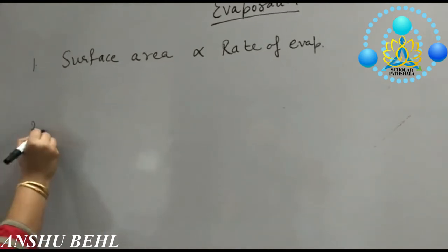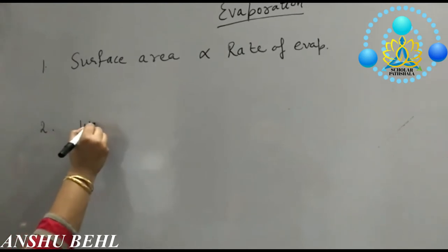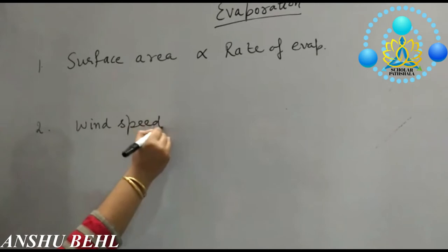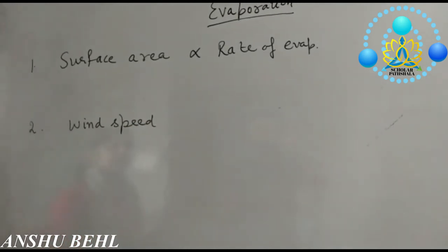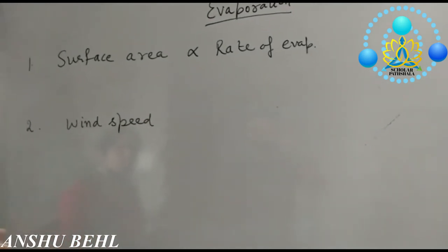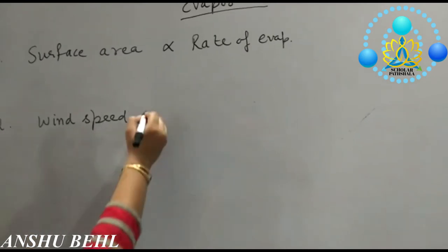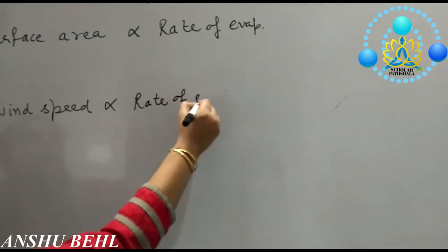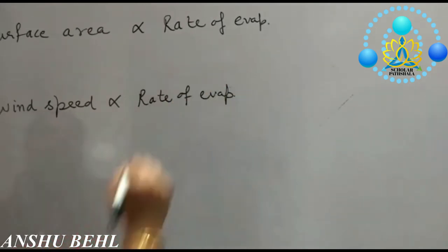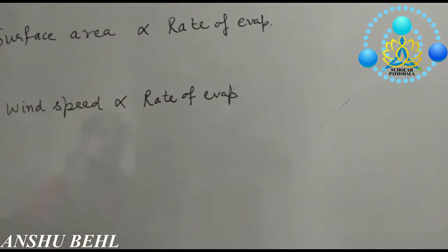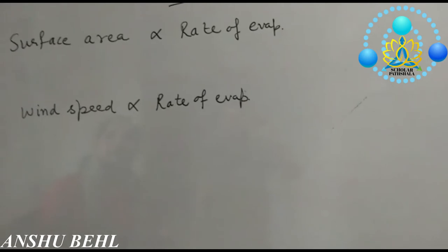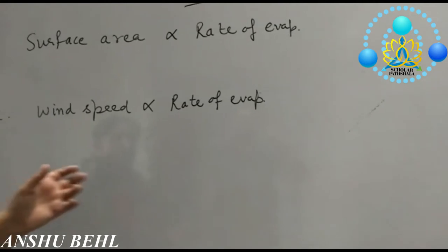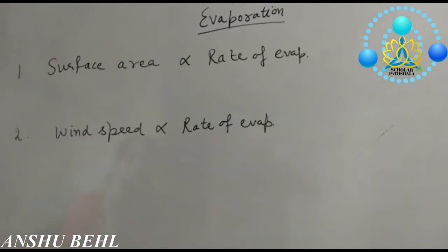The second factor is wind speed. If the wind has more speed, the rate of evaporation increases. Rate of evaporation is directly proportional to wind speed. For example, on a windy day your clothes get dry faster compared to a humid, still day.